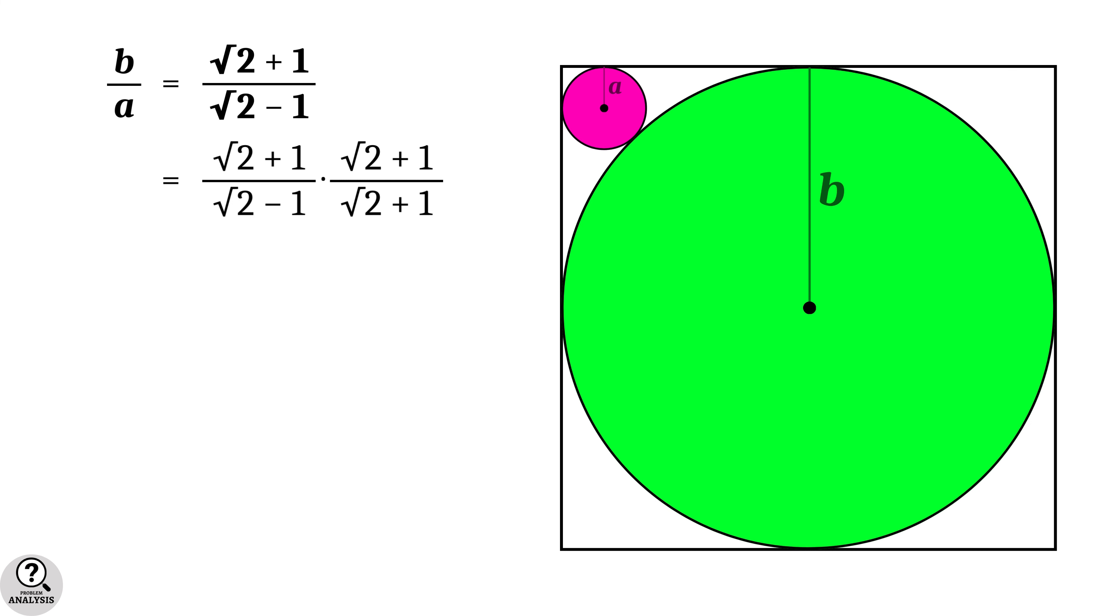Then numerator will become (root 2 + 1) whole square, which is equal to 3 + 2 root 2. And the denominator will become (root 2 - 1) into (root 2 + 1), which is in the form (a + b) into (a - b), and hence it is equal to 2 - 1.